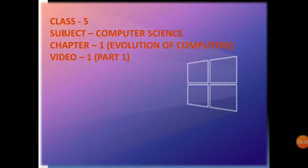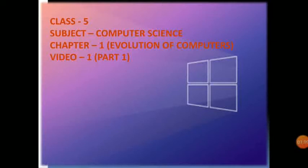The computer processes data accordingly and gives a meaningful result. So what is the computer doing? Number one: it takes in data and instructions by the help of input devices. Number two: it works with data by processing it by the help of the CPU. Number three: it puts out information by the help of output devices.